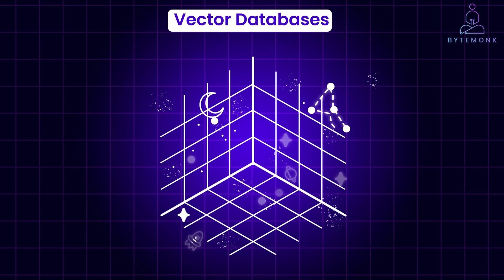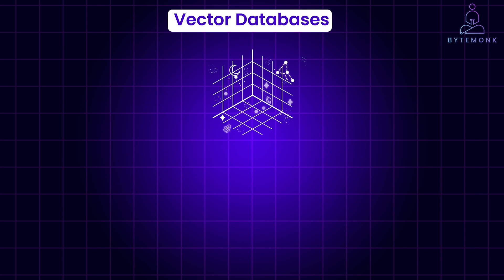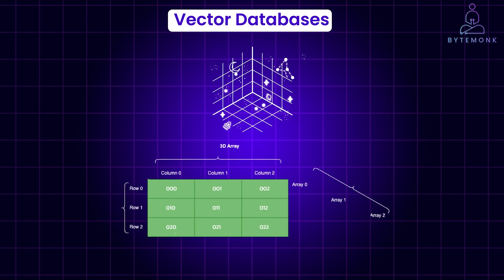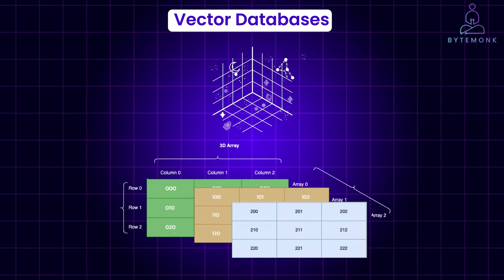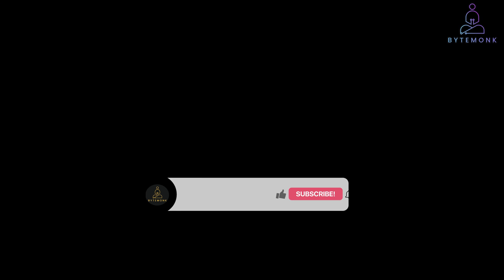Vector databases truly shine when it comes to identifying similarities. Instead of rows and columns, data is represented as mathematical vectors — multi-dimensional arrays of numbers. These vectors capture the essence of the data object, whether it's an image, a piece of text, or even an abstract concept.